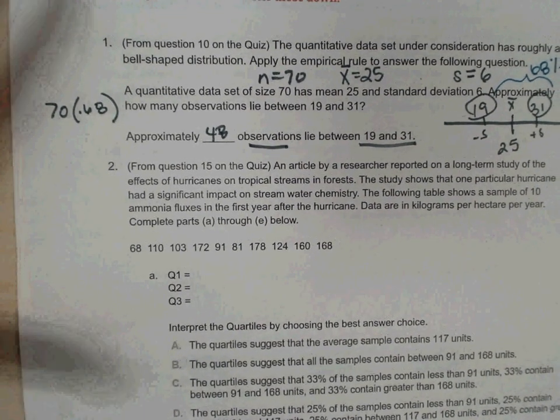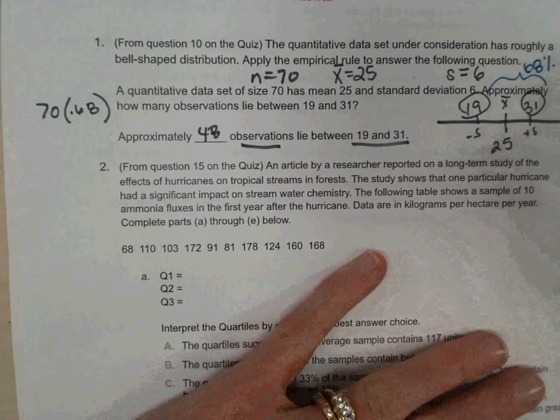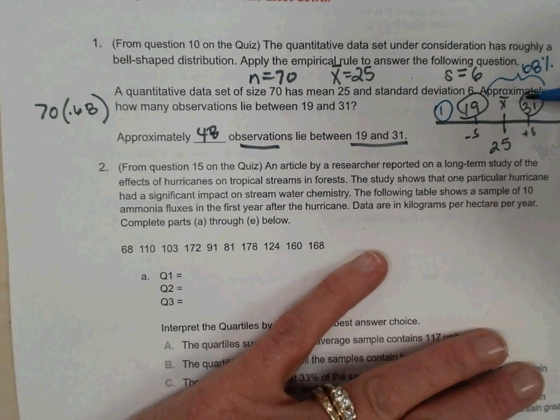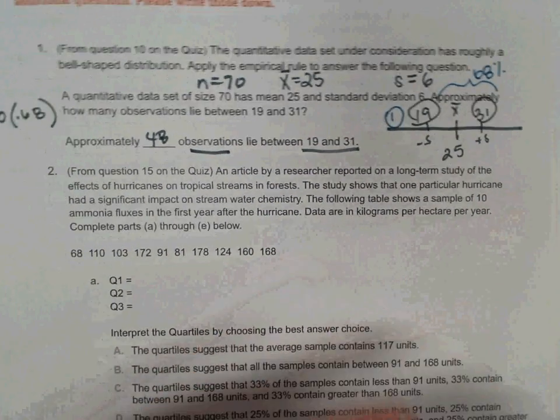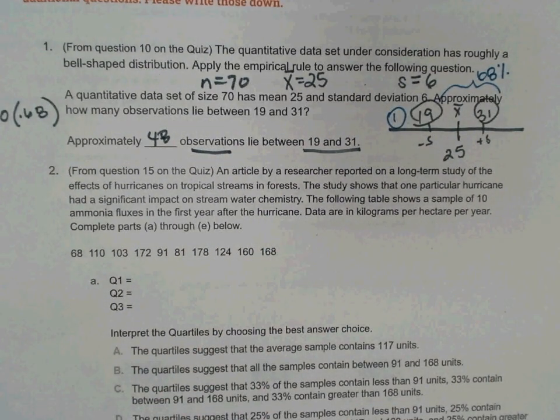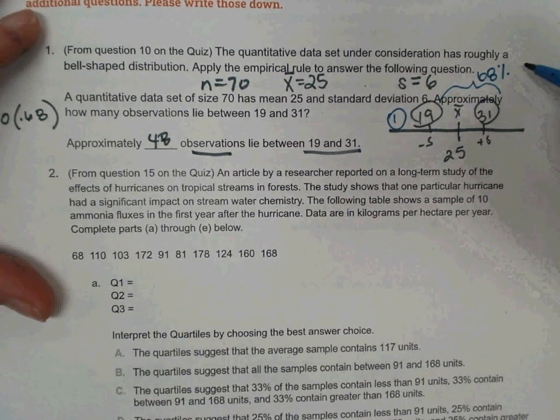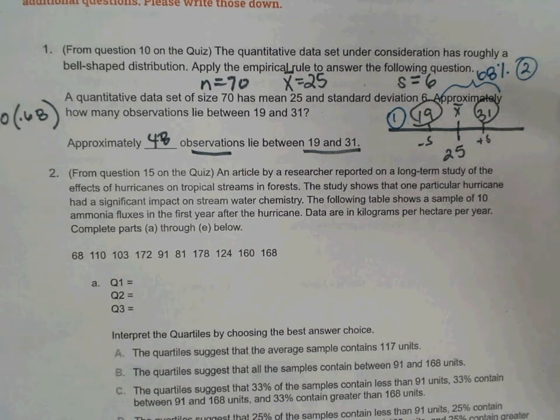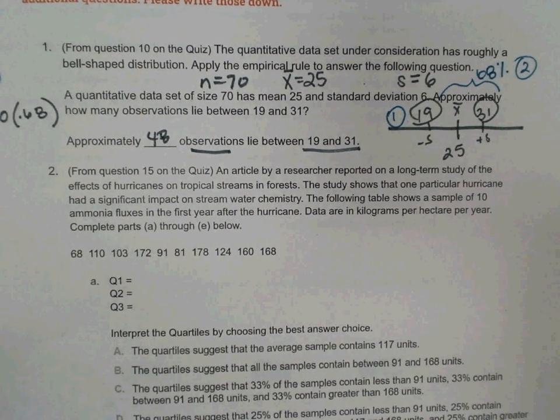It's really a three-step process. First step, I would say draw the number line. It helps. And then label the mean and start counting standard deviations above and below until you reach the target numbers. Step two would be to apply the empirical rule, what percentage of the data lies within that range. And step three would be to multiply that percent times the number of observations.